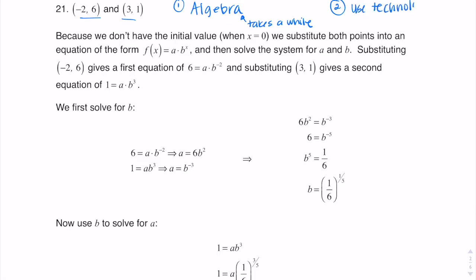For us, technology comes in the form of a TI-84 calculator, and we would use something called exponential regression on that calculator — much like we did with linear regression. We would do exponential regression L1, L2, and Y1. I'm going to show you how to do that first because personally, I prefer this method. I like using technology better because it's faster and it doesn't hurt my brain as much.